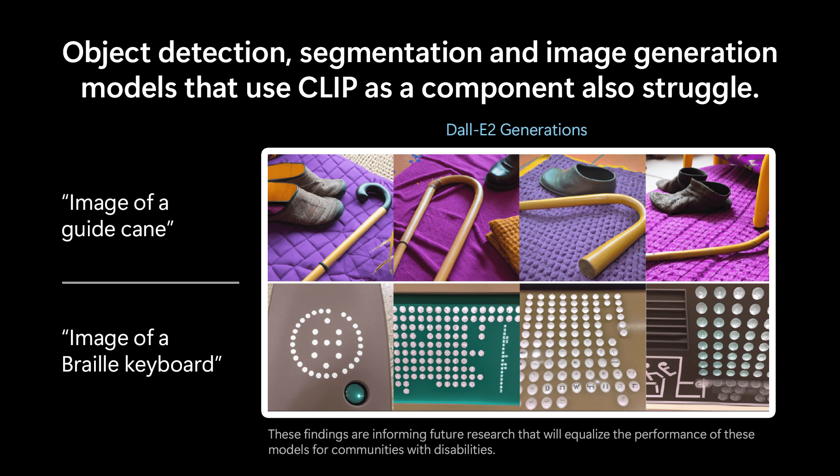Towards our second finding, we examined three models that use CLIP under the hood: an object detection model, an image segmentation model, and an image generation model, and found that all three struggle with disability content. For example, DALL-E 2, which relies on a CLIP vision encoder, cannot generate common disability objects like guide canes and braille keyboards. Instead, as you can see here, it gives very strange looking walking canes and lots of randomly placed white dots. In comparison, DALL-E 2 generated really high quality and realistic images for almost all of the non-disability objects we tested.